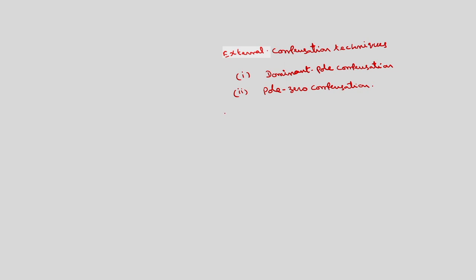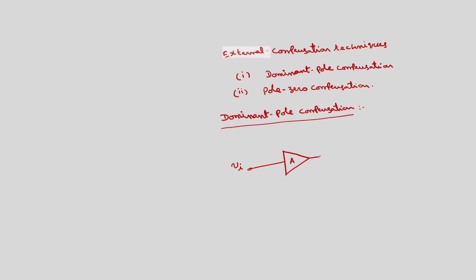First, I will consider the dominant pole compensation. Let A be the uncompensated transfer function. This is A, the uncompensated transfer function with input Vi, and let us call this output as V0 dash. Then externally, we are going to connect an RC network which provides a dominant pole.